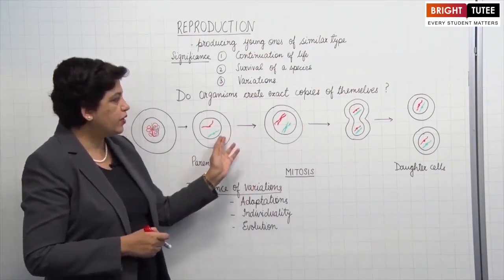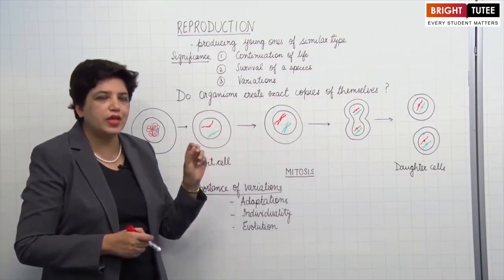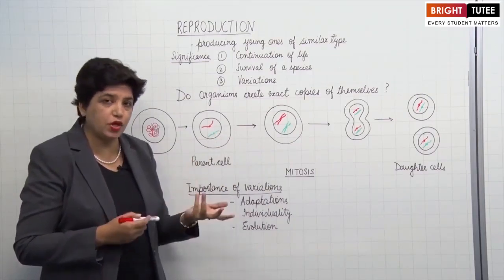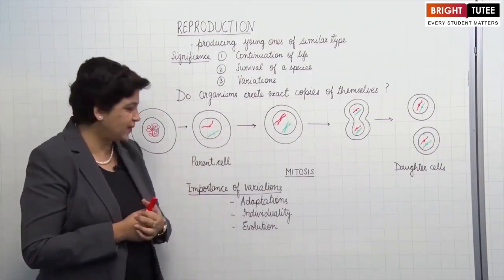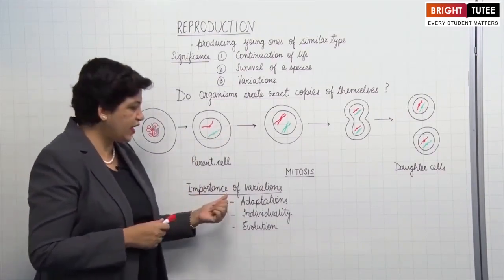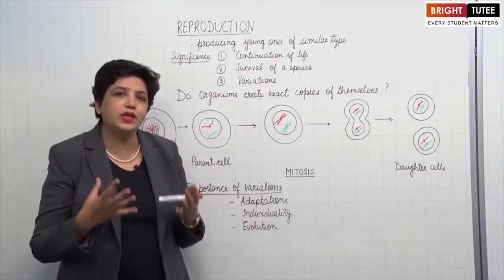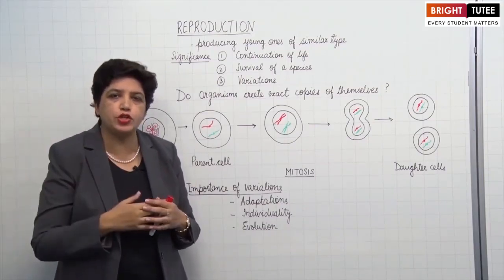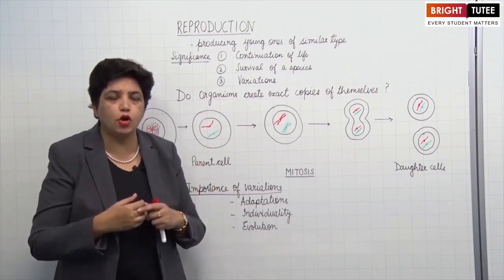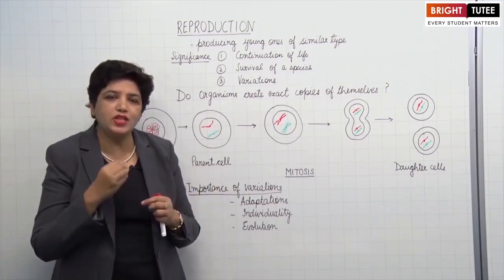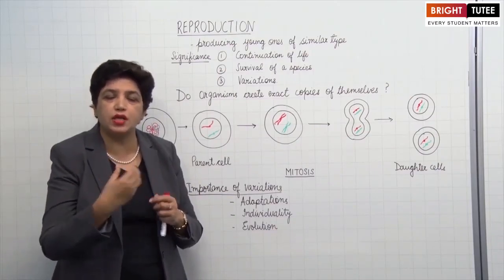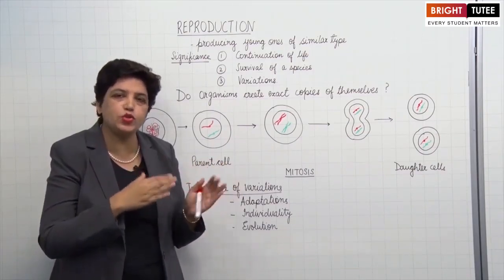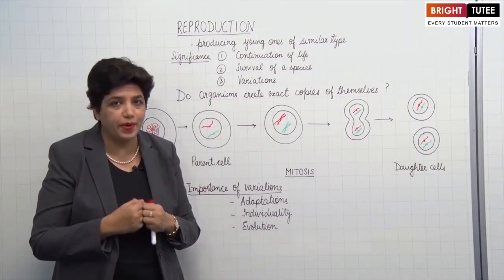During replication, there are some changes called mutations or variations. What is the importance of these variations? Firstly, these variations help in adaptations. On the earth, there can be drastic changes in the environment — certain rise or fall in temperature, a lot of water or lack of water. A new individual has to adapt to these changes; otherwise they will die. So variations help the individuals to adapt to the environment in which they are present.